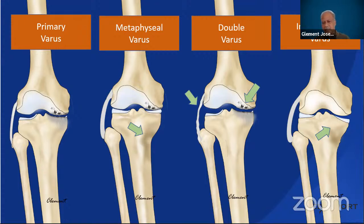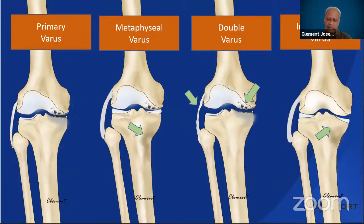Sometimes varus can be aggravated by very lax lateral structures, where the deformity is not only due to bony erosion but also due to lax lateral ligaments — this is called a double varus deformity. Neglected or malunited medial tibial condyle depressed fractures can also lead to varus deformity, called intra-articular varus. It is very important to identify what pattern of varus you are dealing with when treating patients for HTO.